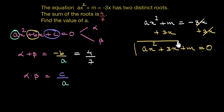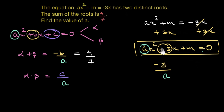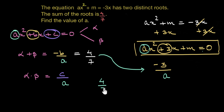Now our quadratic equation is in standard form. For this quadratic equation, the sum of the roots would be given as negative of coefficient of x, that is negative 3, divided by coefficient of x squared, that is a. So negative 3 upon a would be the sum of roots alpha plus beta. But the sum of the roots is given as 4 by 7, which means 4 by 7 is equal to negative 3 by a.